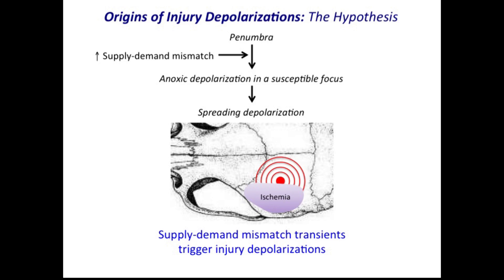Peri-infarct tissue, by definition, is critically hypoperfused and has a stable supply-demand mismatch, but it is not yet depolarized — in other words, anoxic depolarization has not yet taken place. We hypothesized that any transient worsening in supply-demand mismatch would precipitate anoxic depolarization in a susceptible focus, which would be a trigger for a spreading injury depolarization. In other words, supply-demand mismatch transients would trigger injury depolarizations.